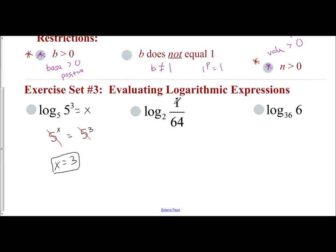Log base 2 of 1 over 64, set it equal to x because you want to find what this value is. Convert to exponential form. Your base is 2, your power is x. 2 to the x power is 1 over 64. Well, we need to remember that 64 is 2 to the 6th power.